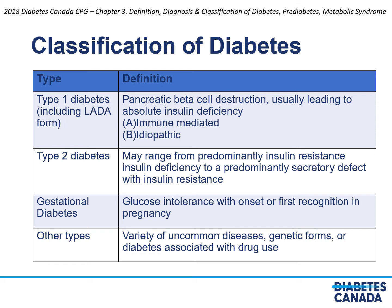There are many other types of diabetes, including genetic forms, forms of diabetes related to other diseases such as acromegaly and thyroid disease, and diabetes associated with multiple medications and drugs, which include L-asparaginase, antipsychotics, and others, which are detailed in the diabetes guidelines document.